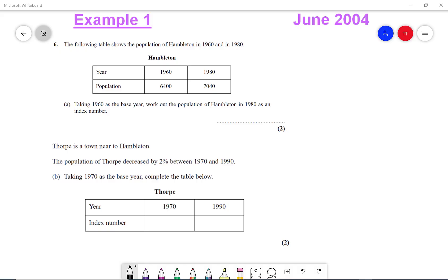We have the population in 1960 as 6,400 and the population in 1980 as 7,040. Now it says taking 1960 as the base year, work out the population of Hamilton in 1980 as an index number.